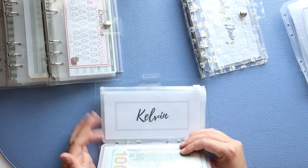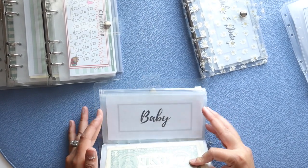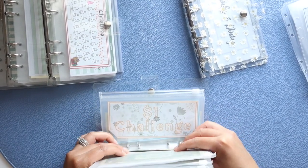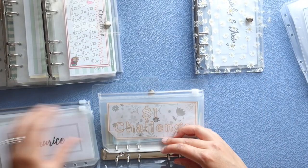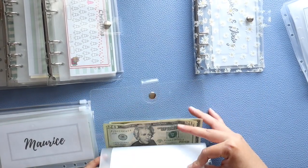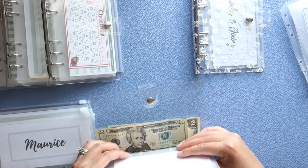I'm taking out Maurice, Kelvin, Jasmine, and Baby. I'm going to be switching my long-term savings challenge into my Daisy binder, so this is coming out. And I'm not going to be doing the one dollar or the five dollar savings challenge anymore.